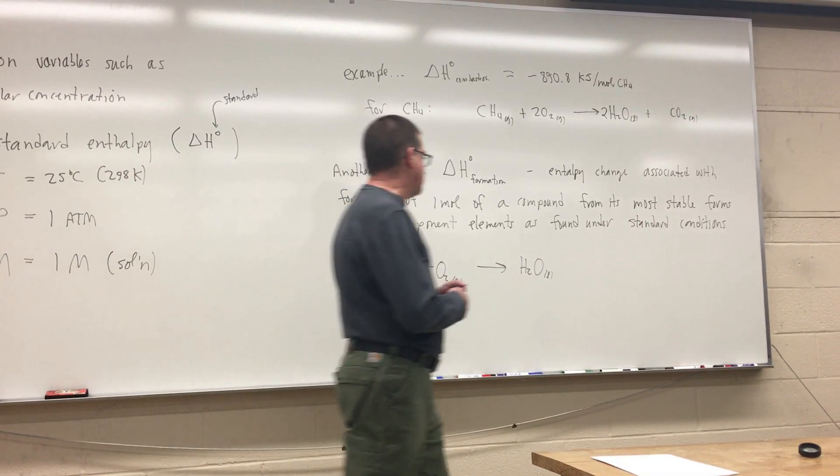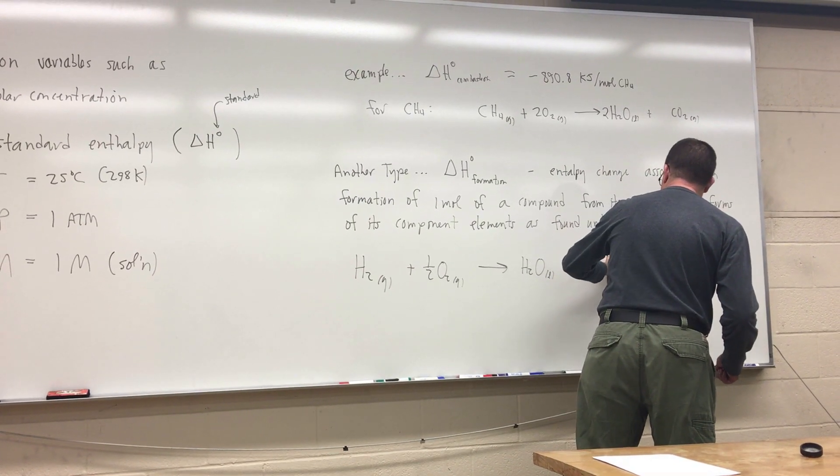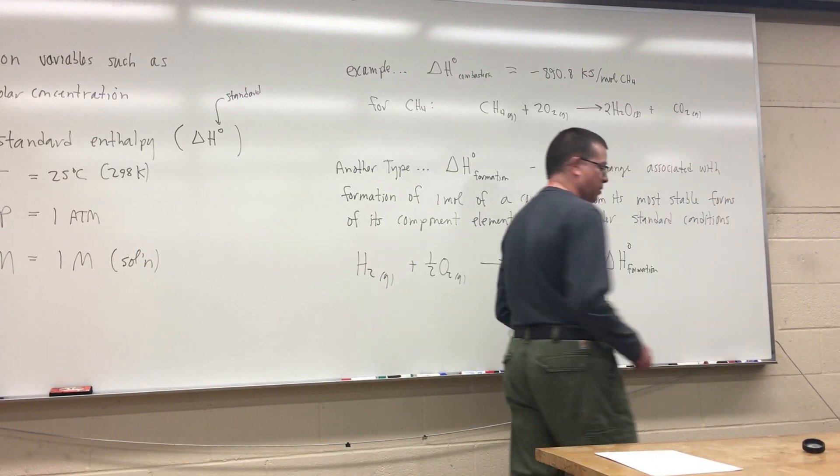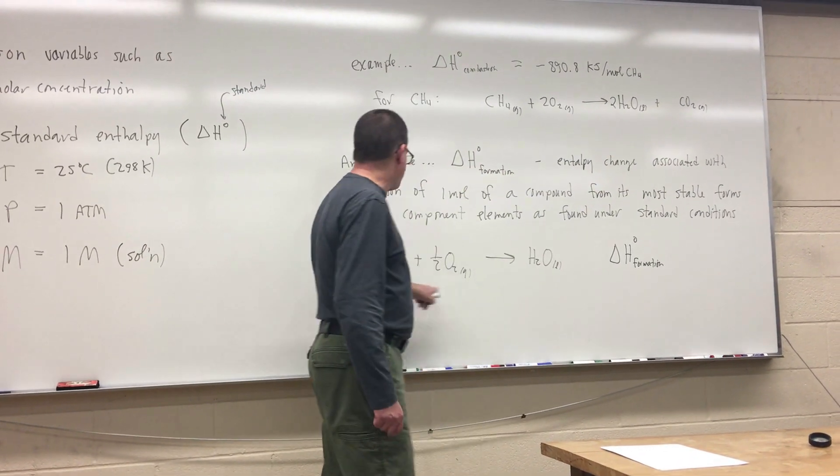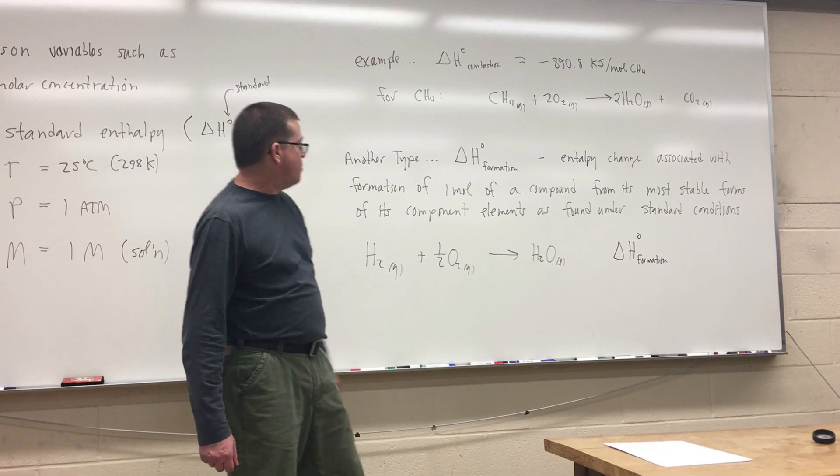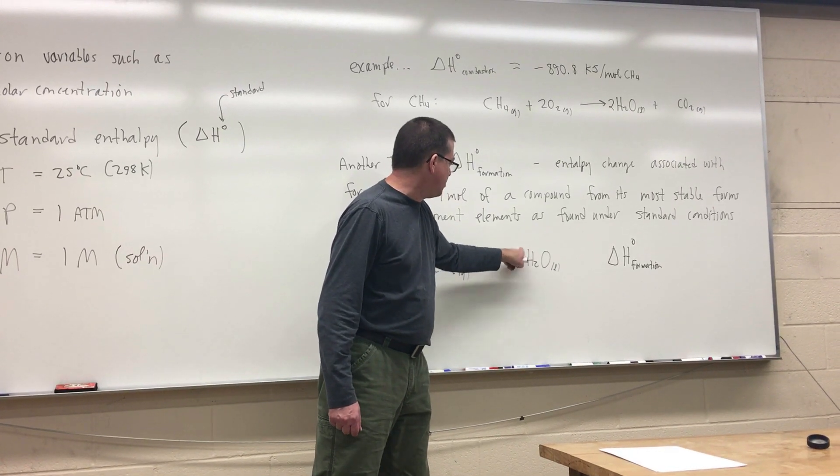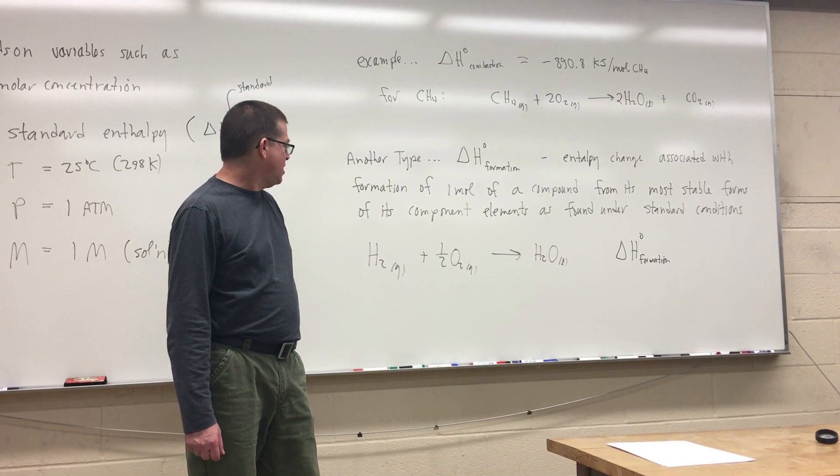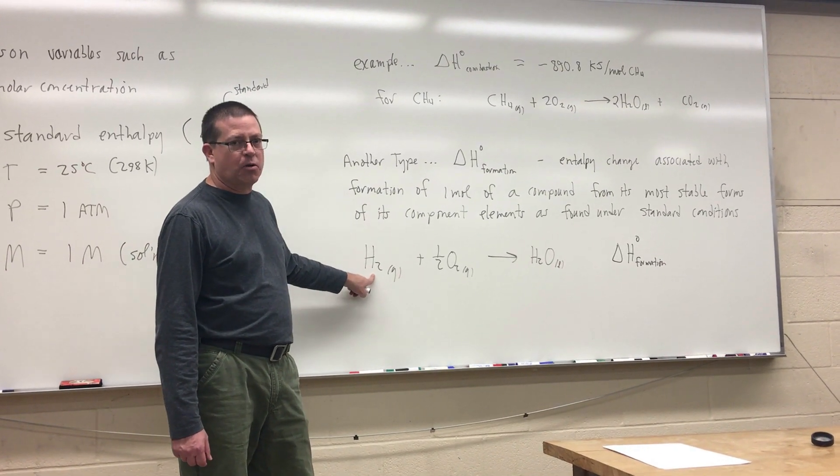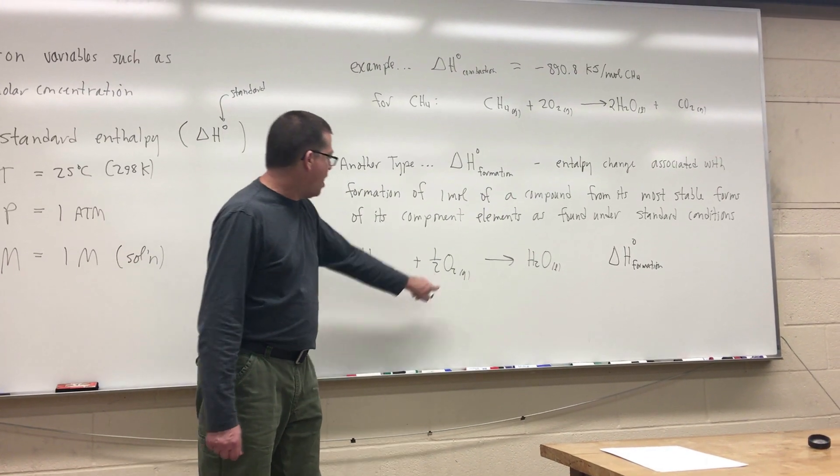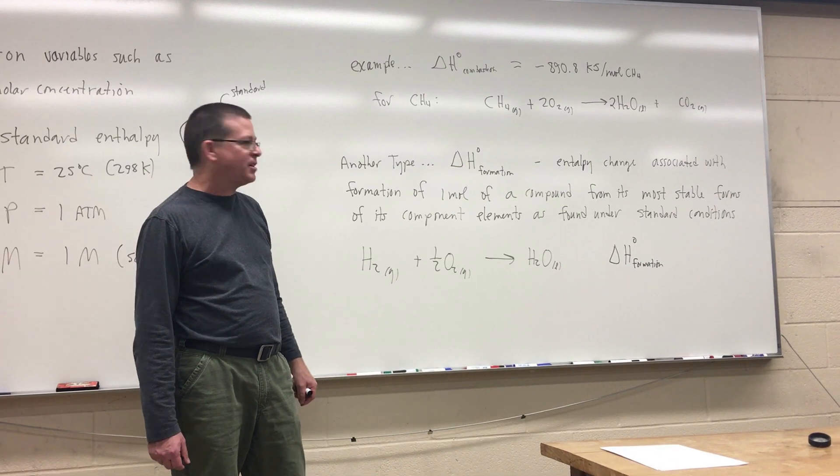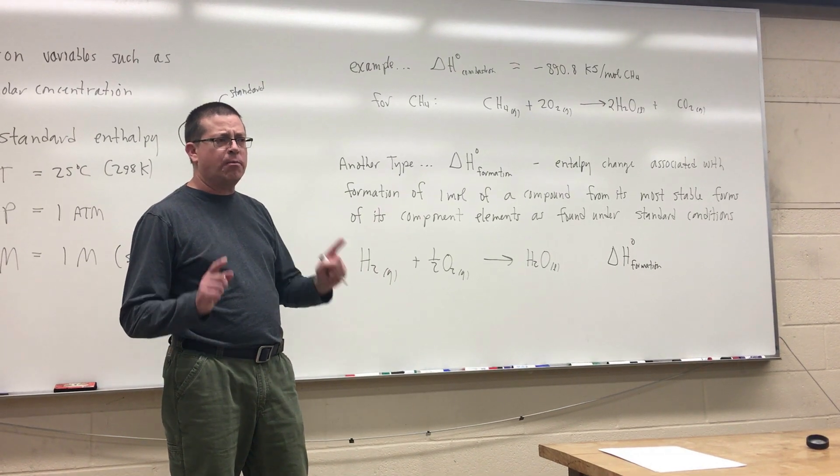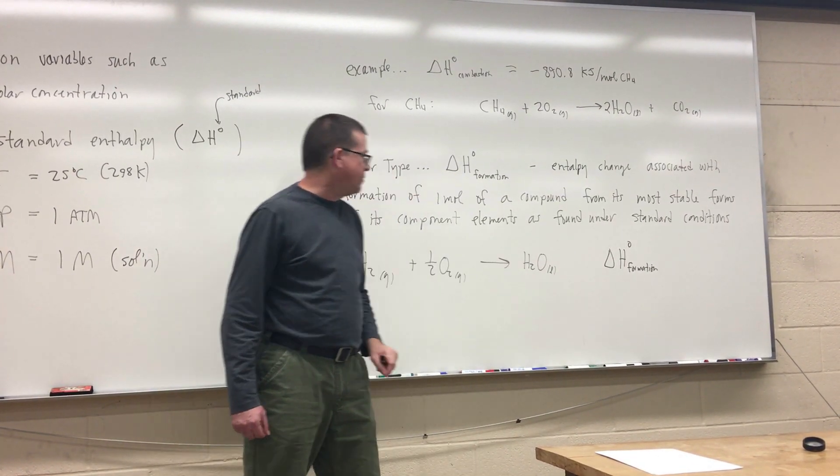If I wanted to do a delta H of formation of water, I could do that. A delta H formation standard state would correspond to this particular equation. Now again, I'm making one mole of water, so notice that the coefficient here is one, and I'm going to make it from its elements as I find them under standard state conditions. So that's the combination of hydrogen in the gaseous form because that's how I find it under standard state conditions. Oxygen is also a gas under standard state conditions. I have to put a one-half coefficient in front of the oxygen to make everything work out so that I can make one mole of my compound. So that's coefficient one in front here.